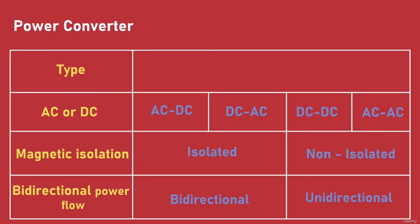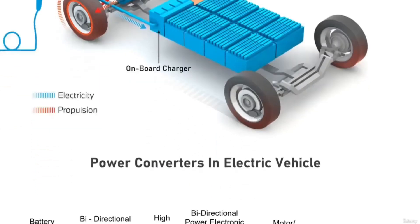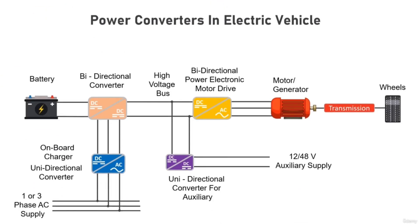This table gives you an overview of the three simple ways to classify power converters: based on AC or DC power, power flow direction, and presence of isolation. Different types of power converters can be developed that meet a combination of these characteristics. With this knowledge we can look at the four main power converters in an electric car: the onboard charger, the traction battery converter, the auxiliary battery converter, and the motor drive.